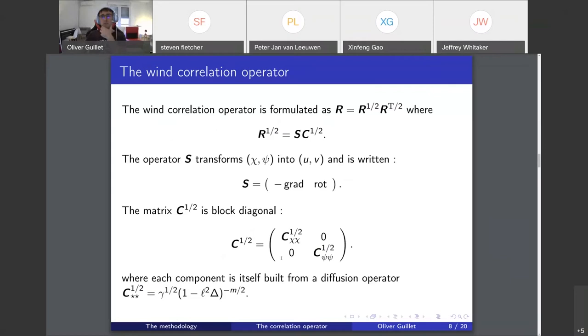It will be R equals the square root times the transpose of the square root, ensuring the symmetry. The square root of R will be the transformation which we saw before, with minus gradient, gradient, and the curl, and the square root of a correlation matrix. Here you have a reminder of S, and the matrix C one half will be block diagonal. On the first diagonal you have a correlation matrix for the phi variable, and on the second diagonal you have the psi variable.